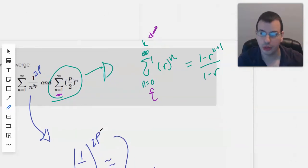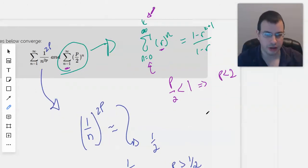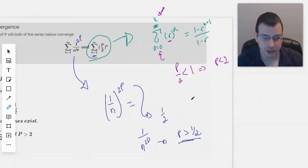So the key takeaway is R, the ratio, has to be less than 1. So P divided by 2 is less than 1. Therefore, P is less than 2. So we have the two conditions: P has to be greater than 1 half, P has to be less than 2.